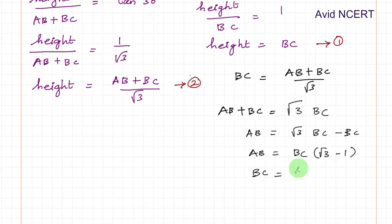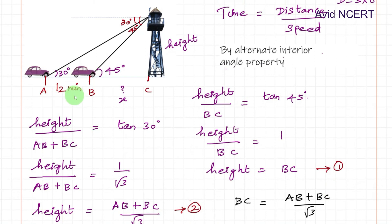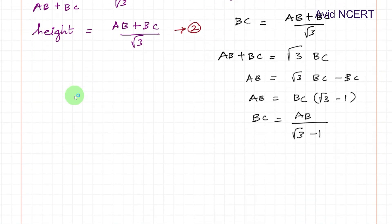So BC equals AB divided by root 3 minus 1, and the value of AB we know here is 12 minutes. Substituting that here, BC equals 12 divided by root 3 minus 1.